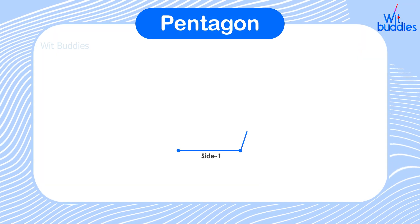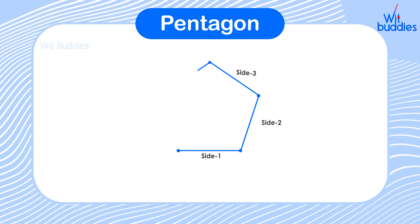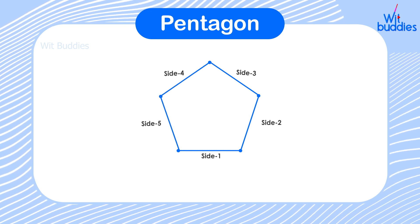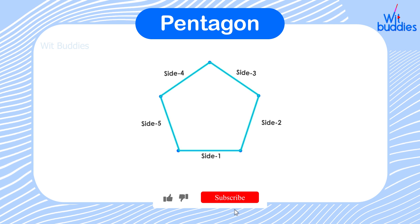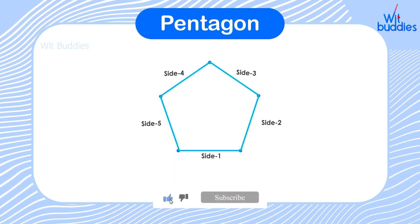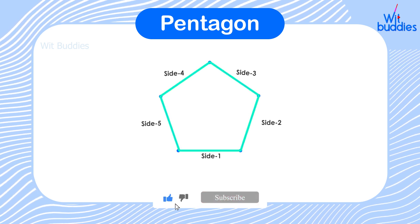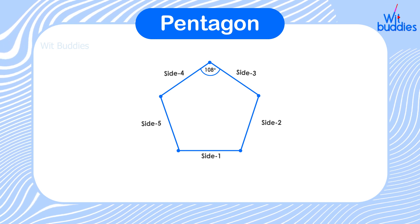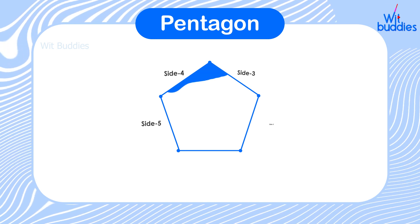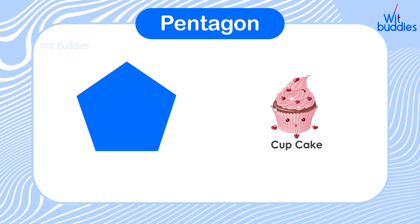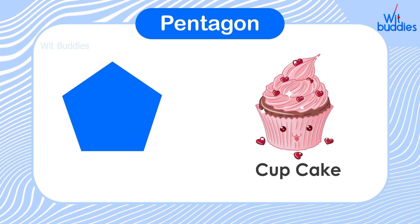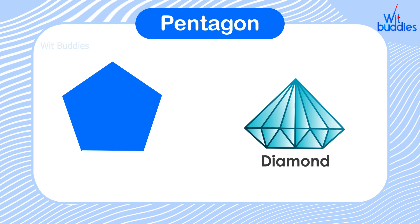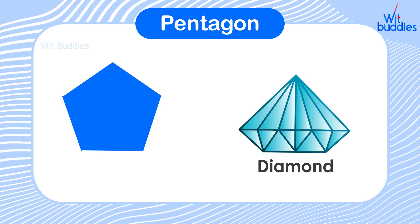Pentagon: A pentagon is a five-sided polygon and it can be regular or irregular. In the case of a regular pentagon, each interior angle is equal to 108 degrees. Cupcakes, school crossing signs, and diamonds are some examples of a pentagon.